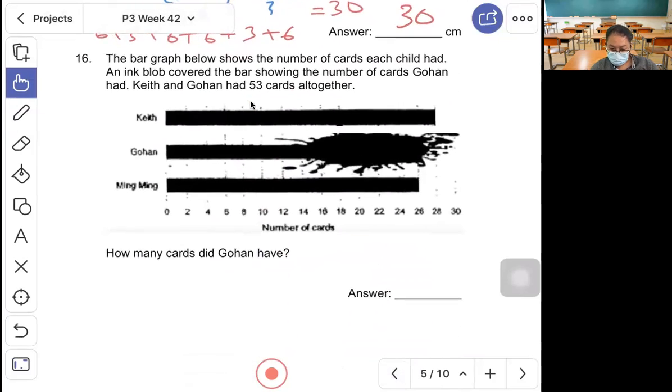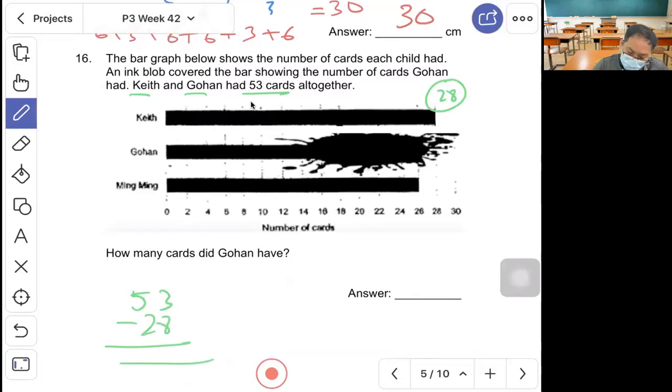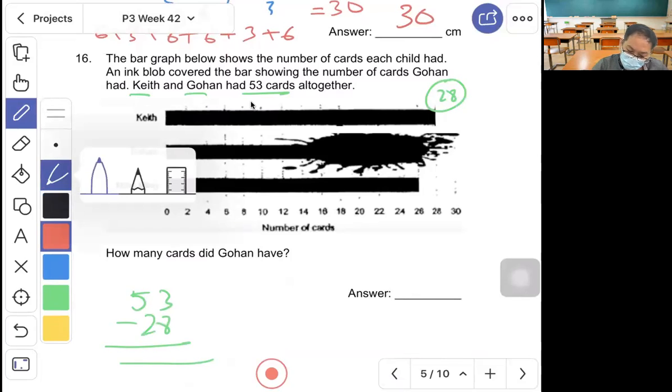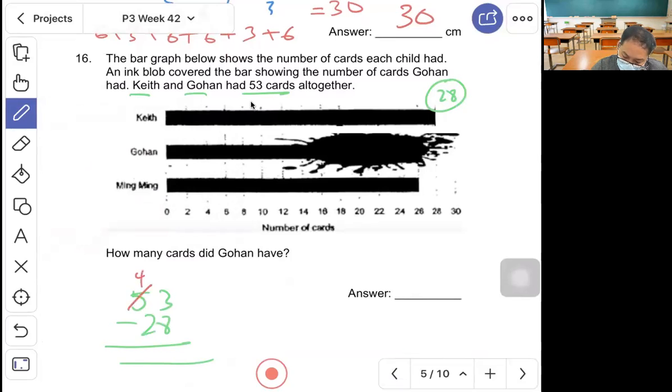Question 16, the bar graph below shows the number of cards each child has. Draw the bar showing the number of cards Johan had. Keith and Johan had 53 cards altogether. The keyword here is Keith and Johan had 53. Keith is 28, Johan we don't know. Take 53 minus 28, and you will find out that Johan had 25.